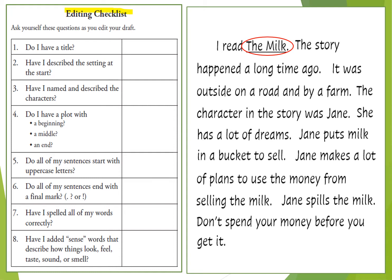The first question is: do I have a title? I have it right here — The Milk. Check. The next thing on our checklist: have I described the setting at the start? So that's asking me, did I put it at the beginning of my writing? Happened a long time ago — that was when. I was outside on the road and by a farm — that was where. Check, that is all set.